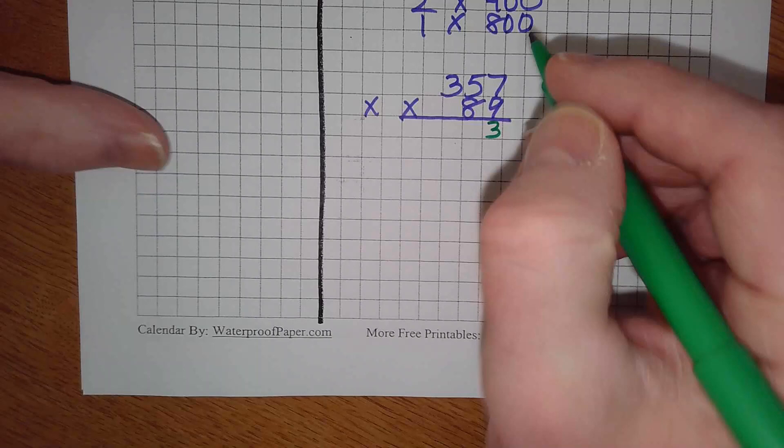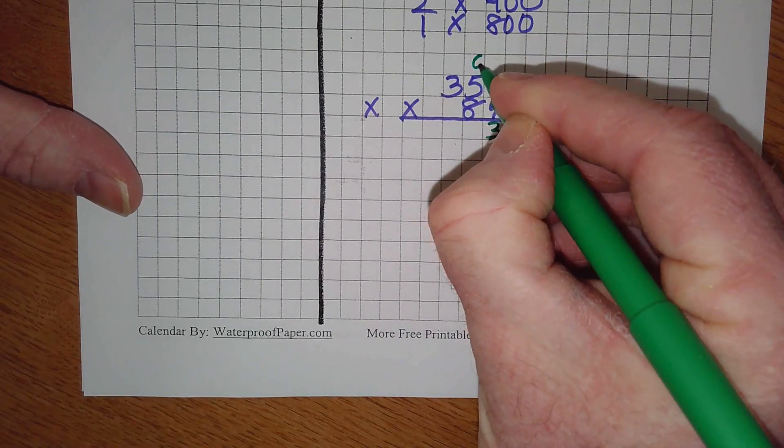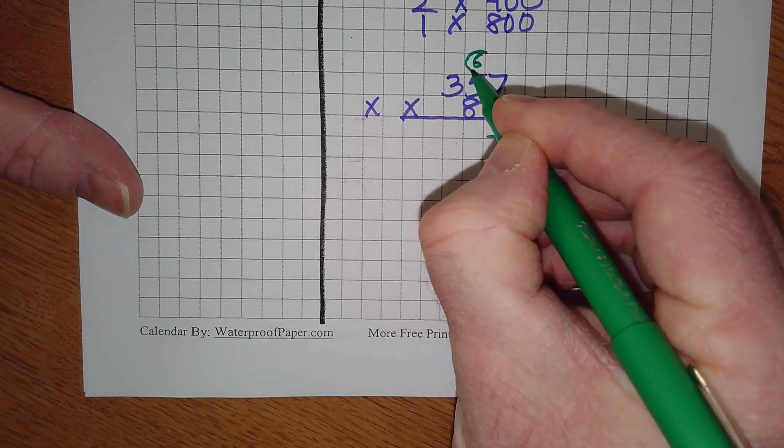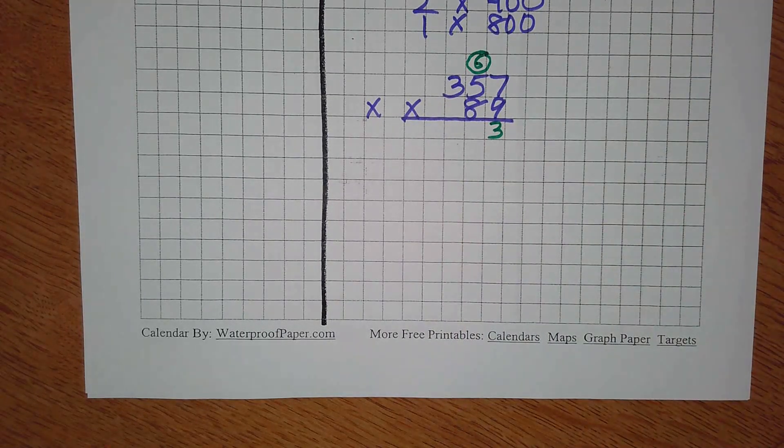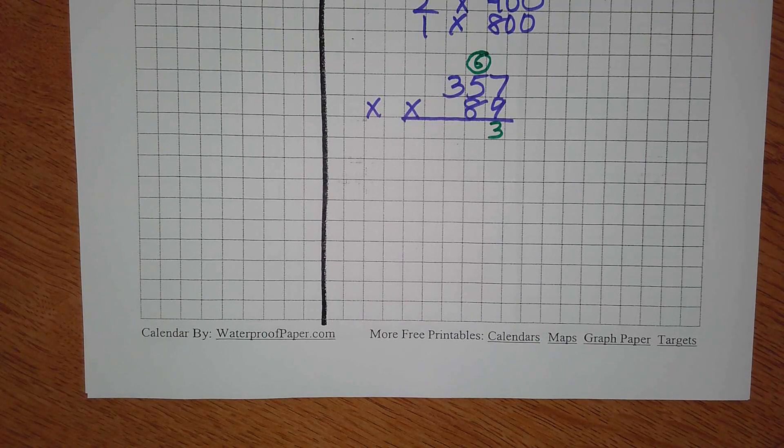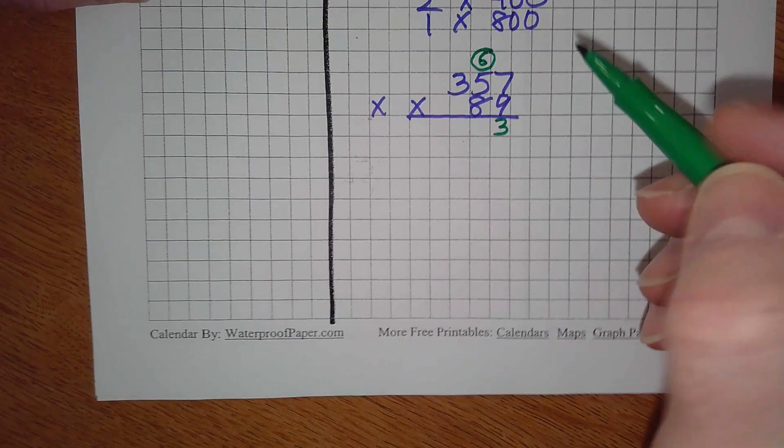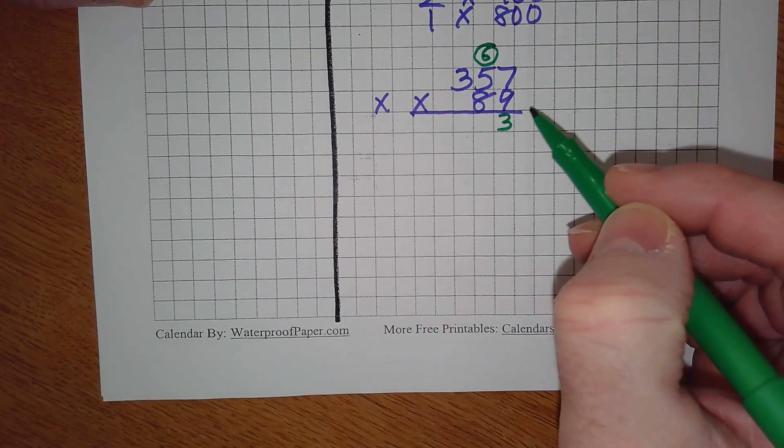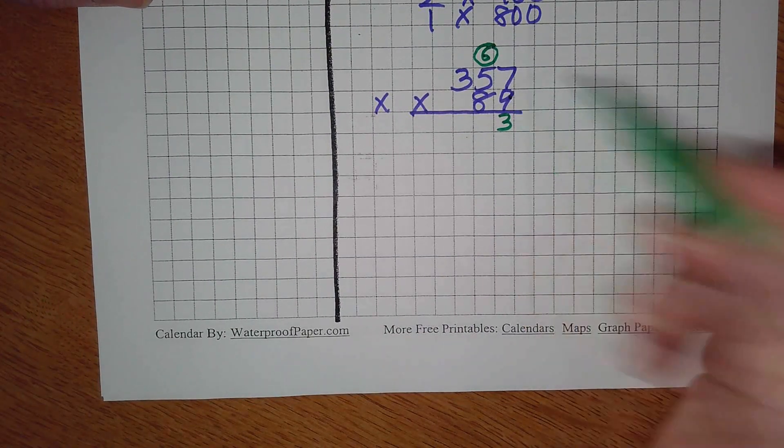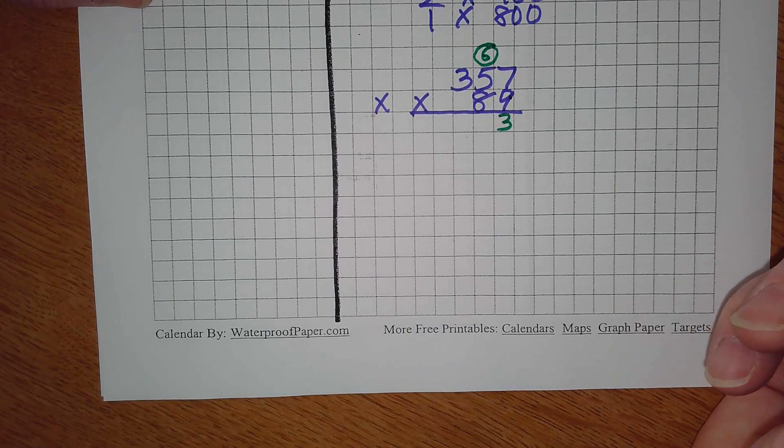What's our word we've been working on it all year? Regroup it above the tens. Some of you are still not regrouping and some of you are still not circling. Circle it so you know it's a regrouped number. Some of your regroup numbers look just like same size as your other ones and then you get messed up.